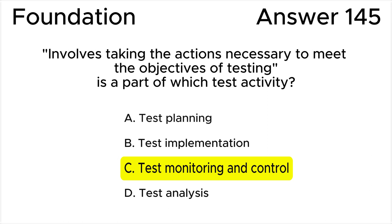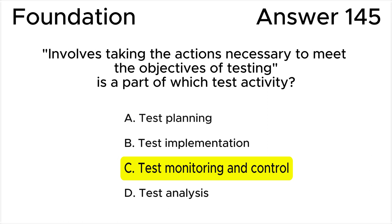Answer A is wrong because test planning consists of defining the test objectives and then selecting an approach that best achieves the objectives. At this phase, testers don't take the actions necessary to meet the objectives of testing.